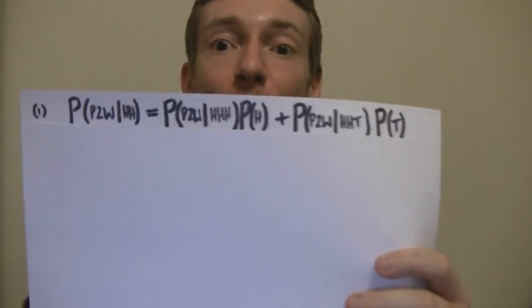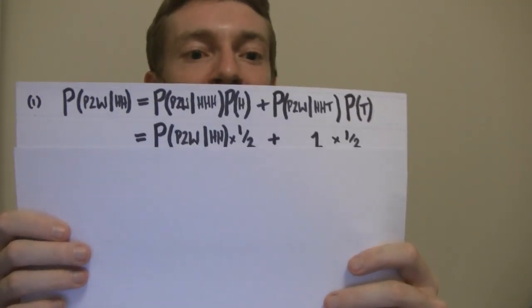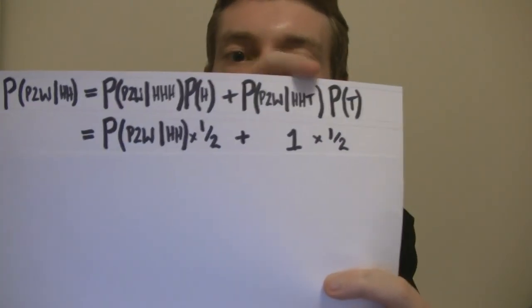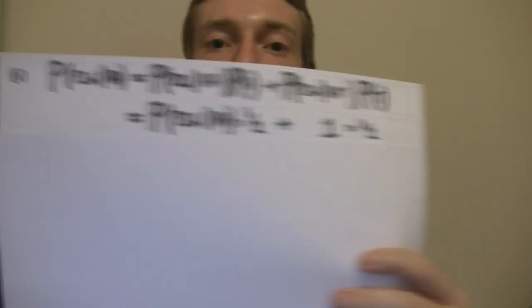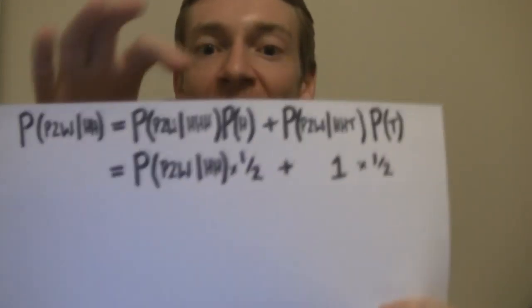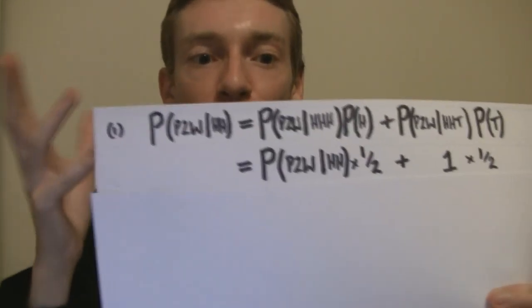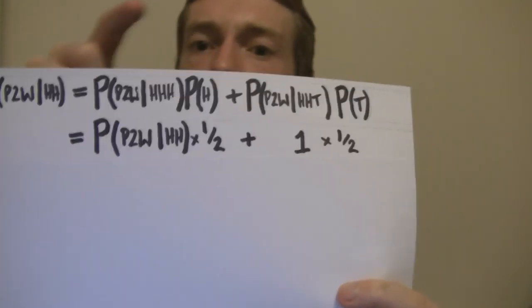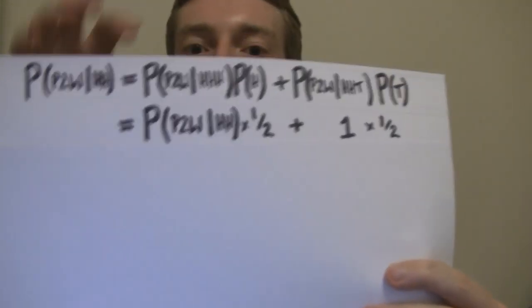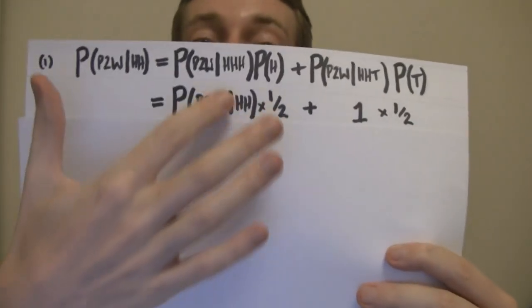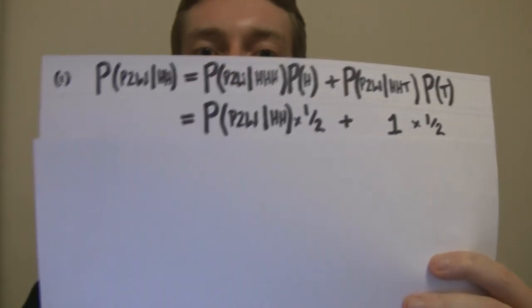We can start to fill in numbers. Probability of tails is a half. The probability that player two wins given heads-heads-tails turns up is one — that's certain, because player two picked heads-heads-tails, so player two wins. Probability of heads is also a half. And if heads-heads-heads turns up, we're back to square one — the coin has no memory. So if heads-heads-heads turns up, we're really back to the probability that player two wins given heads, heads, which is the same expression. You can do this idea three more times and get the same results.